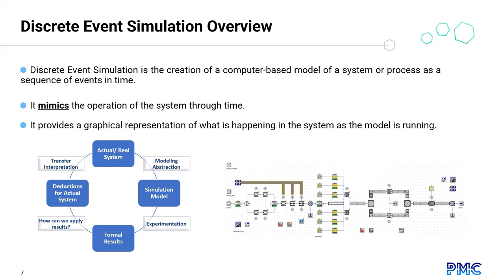What is discrete event simulation? Discrete event simulation, or DES, is the creation of a computer-based model of a system or process as a sequence of events in time. Each event occurs at a specific time and causes changes in the state of the system. Between consecutive events, the system is considered to not change at all, so the simulation can jump directly from one event to the next. It mimics the operation of the system through time and provides a graphical representation of what is happening as the model runs.